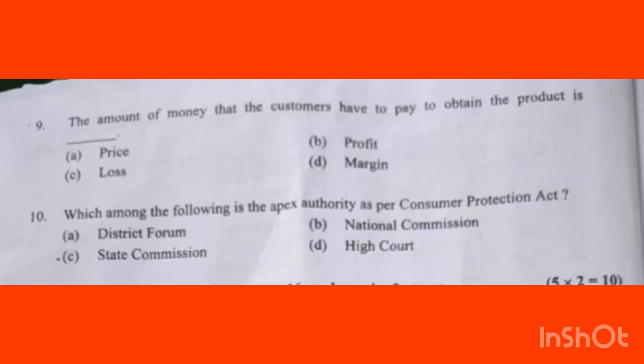The amount of money that the consumer has to pay to obtain the product is dash. One product, one consumer — the consumer will pay the amount of money. Options are: price, profit, loss, or margin. The right answer is Price. Option A — price — is the correct answer.